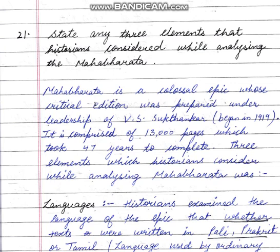Whenever we write any answer, first comes the introduction. In the introduction, we give a little background or a general introduction. Since this question is about the Mahabharata, we will first write two lines about it. For example: 'Mahabharata is a colossal epic whose critical edition was prepared under the leadership of V.S. Sukthankar, begun in 1919. It is comprised of 13,000 pages which took 47 years to complete.'